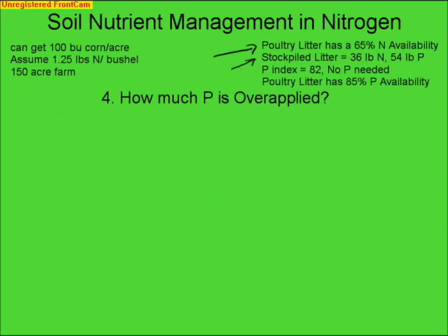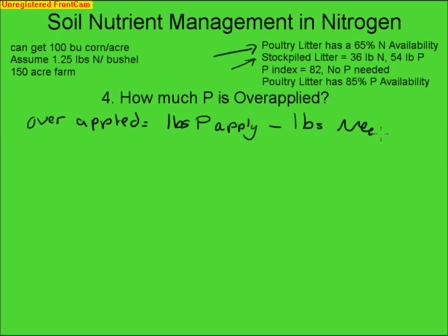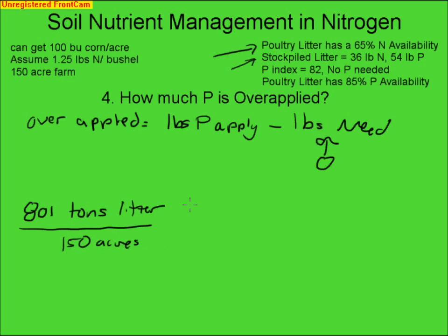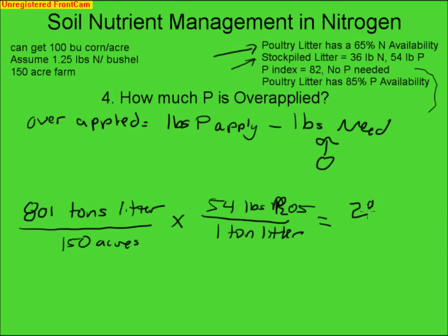This brings us to the question: how much P is over-applied? Over-applied P equals the pounds of P we are applying minus the pounds we need. In this case, we need 0, so anything we are applying is going to be over-applied. We have 801 tons of litter over our 150 acres, and multiplying by 54 pounds of P2O5 in every 1 ton of litter gives us 288 pounds of P per acre.